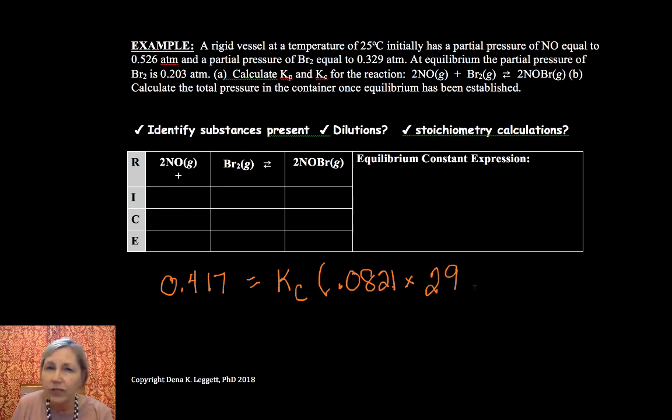And that's to the delta N. Well, delta N, and that's delta N of gas, it's not listed that way, but I like to write it that way as a little reminder to myself I'm only dealing with gases, is going to be 2 minus 2 plus 1. So delta N is minus 1.